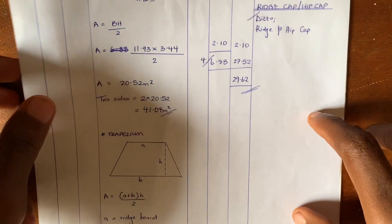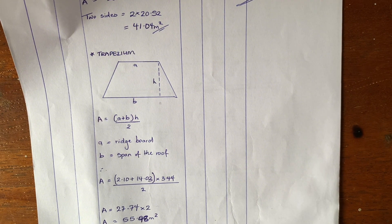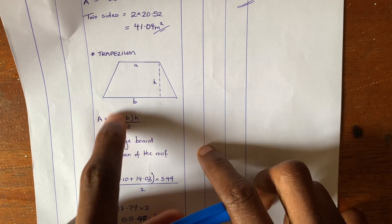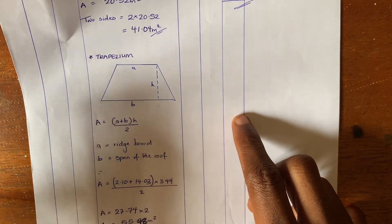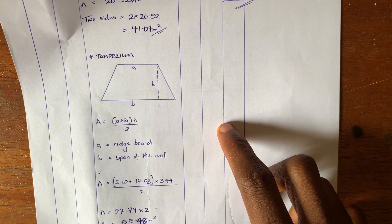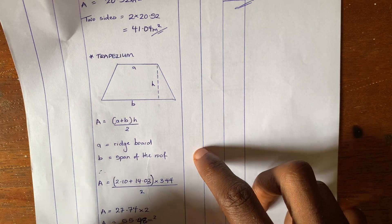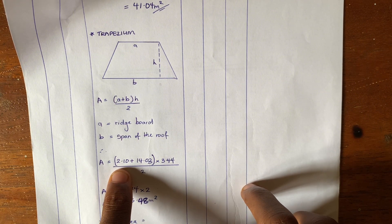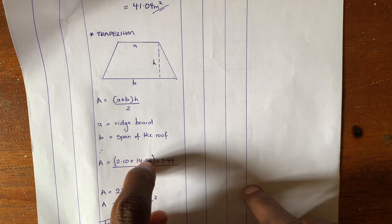The next thing to find is the trapezium area. The area of a trapezium is (a + b) × height divided by two, where 'a' is the length of our ridge board, 'height' is the length of the common rafter, and 'b' is the span of the roof. The ridge board we calculated was 2.10 meters, and the span of the roof is 14,025mm.